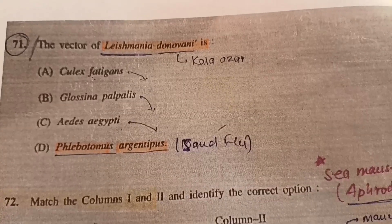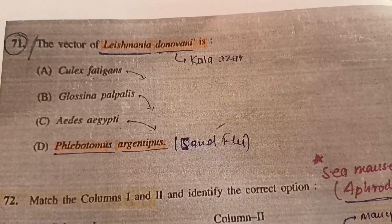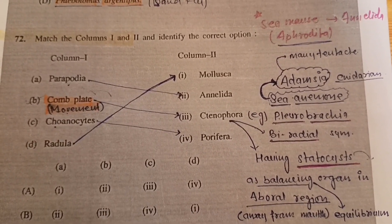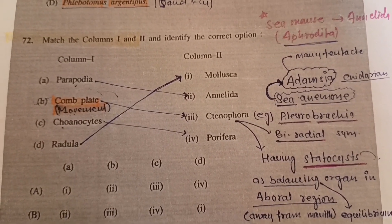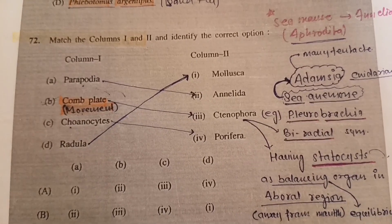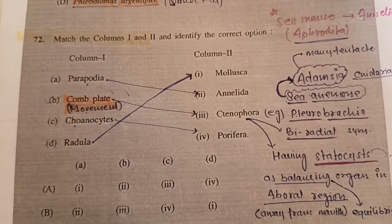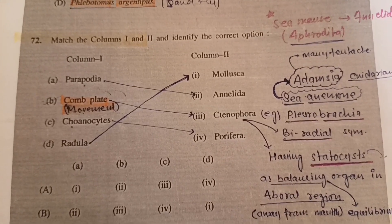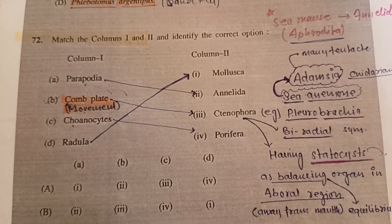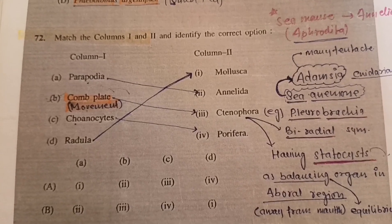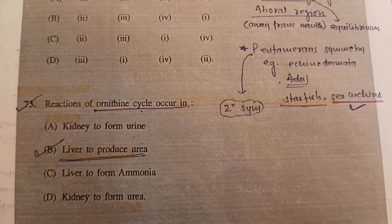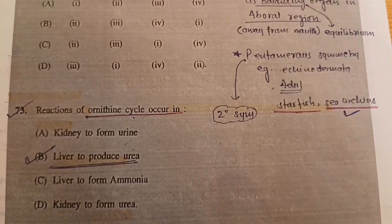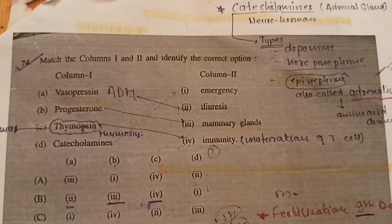Question 71: The vector of Leishmania donovani is — answer will be D, Phlebotomus argentipes. Question 72: Match column 1 and 2 — answer will be B, where parapodium matched with Annelida, comb plates with Ctenophora, choanocytes with Porifera, and radula with Mollusca. Question 73: Reactions of the ornithine cycle occur in — B, liver, to produce urea.